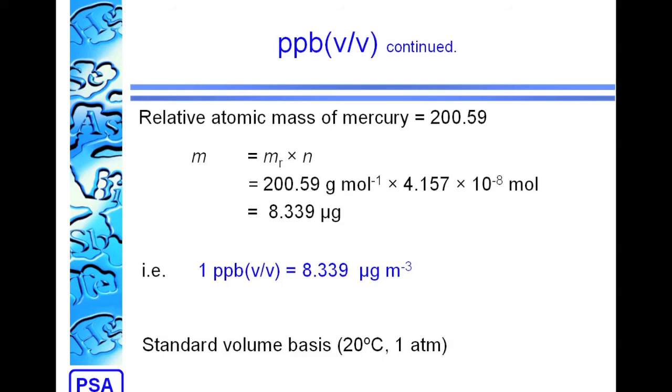As that's per meter, we don't need to do any more maths, we just get 1 part per billion volume is the same as 8.3 micrograms per cubic meter. Again, that's on a standard basis.